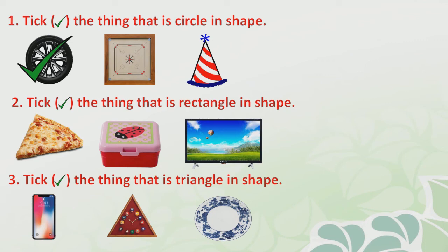Second one: tick the thing that is rectangle in shape. First one is a slice of pizza — it is triangle in shape. Tiffin box — that is square in shape. And television — that is rectangle. So this is our correct answer. Third one: tick the thing that is triangle in shape. Mobile phone — it is rectangle in shape. Plate — it is circular in shape. This is a wall clock — it looks similar to triangle. So this is our correct answer.